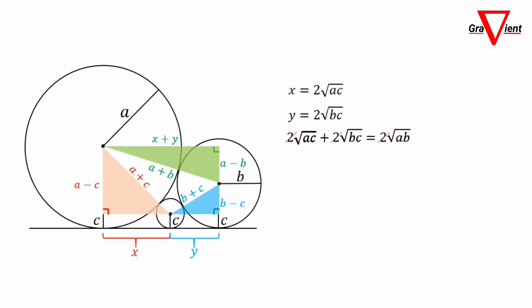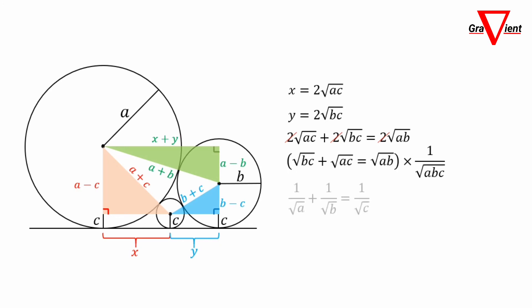Substitute X and Y into the last equation and simplify. Multiply both sides by one over the square root of ABC. We get an interesting relationship: 1 over the square root of A plus 1 over the square root of B equals 1 over the square root of C. Very interesting — you can use this formula to solve similar problems more easily.